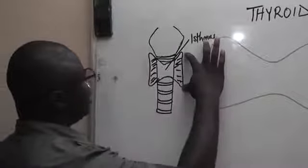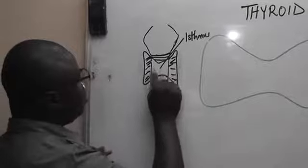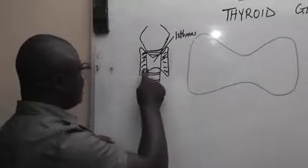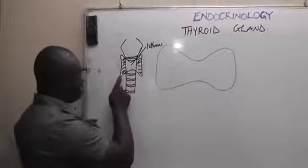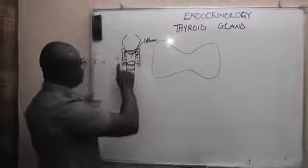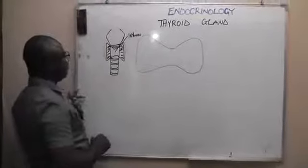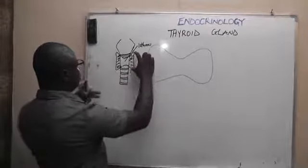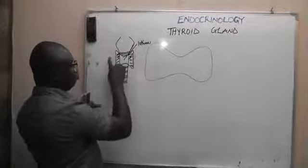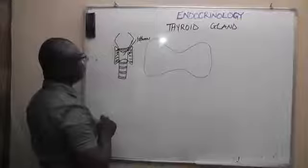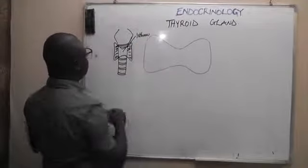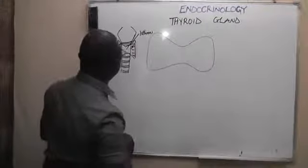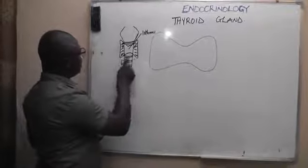The thyroid gland is made up of two lobes, one on each side, and these two lobes are connected by a broad structure known as the isthmus. This gland is highly vascular — very important. It is also covered with fibrous tissue. Behind each of these lobes, we have two parathyroid glands.